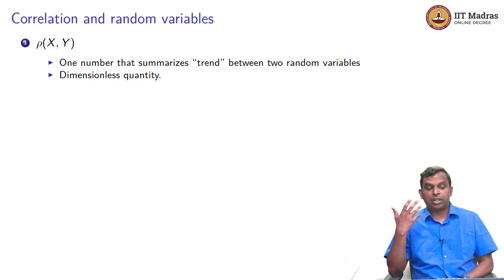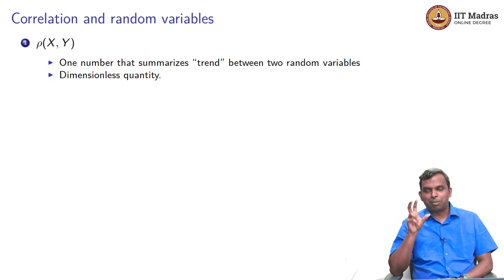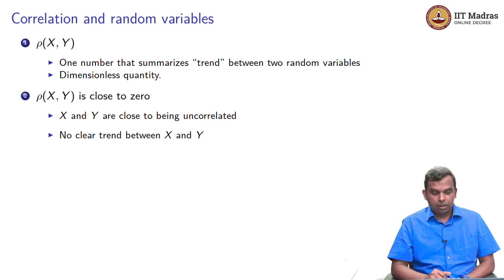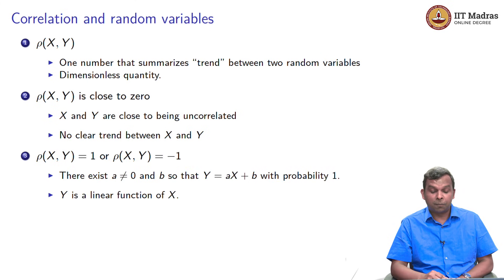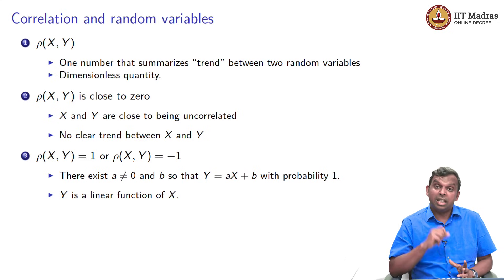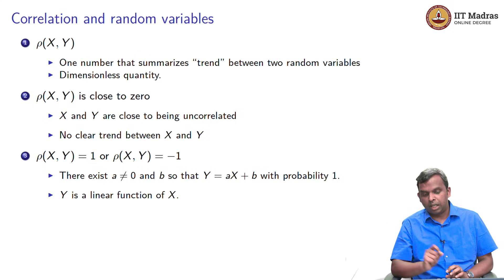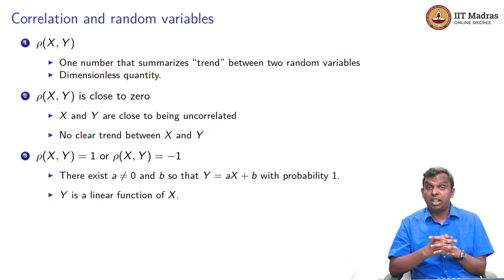Rho of xy is just one number which summarizes the trend. If x were to increase, y would also tend to increase — that is a positive trend. If it is close to 0, they are uncorrelated, there is really no observable trend between x and y, maybe they are not even related. If rho of xy becomes equal to 1 or minus 1, here is a very surprising and powerful property: y is a linear function of x. This is something very important to remember.